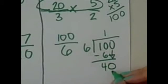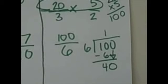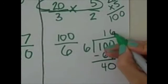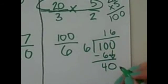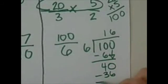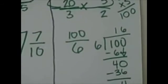6 goes into 40 how many times? We have to calculate. 6 goes into 40 6 times, 6 times 6 is 36. And you subtract, and we have 4 left over. Now let's zoom out because you can't see anymore.